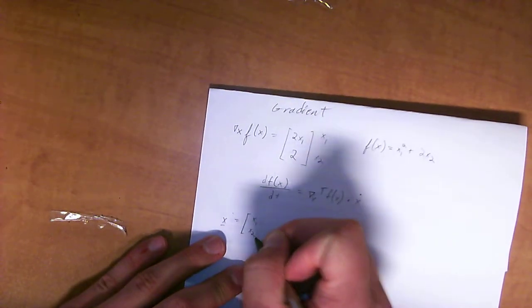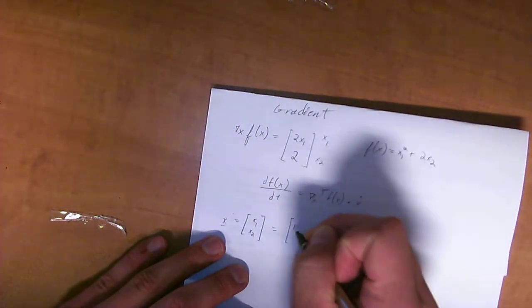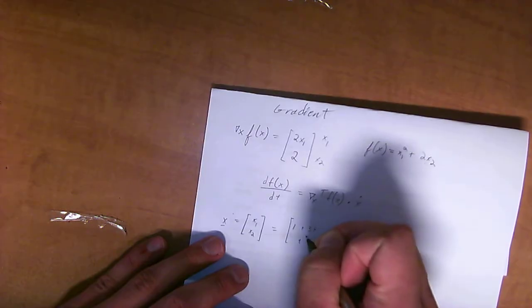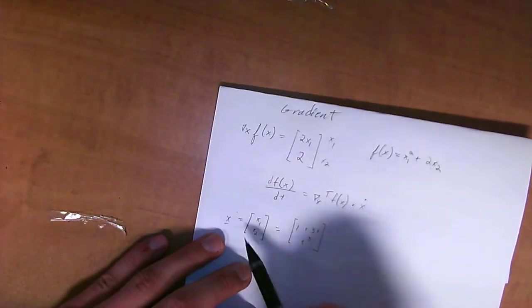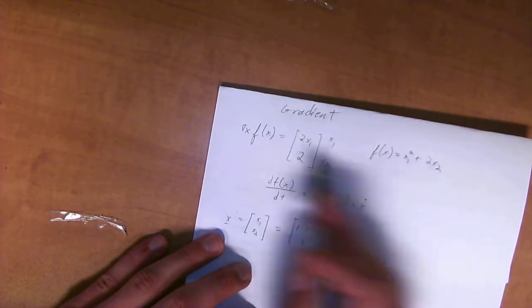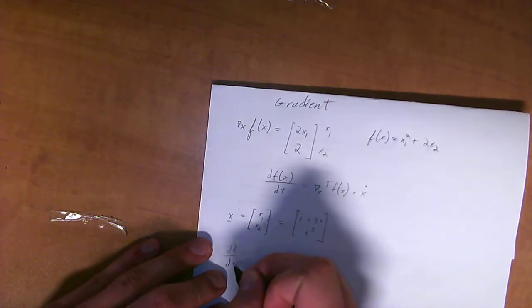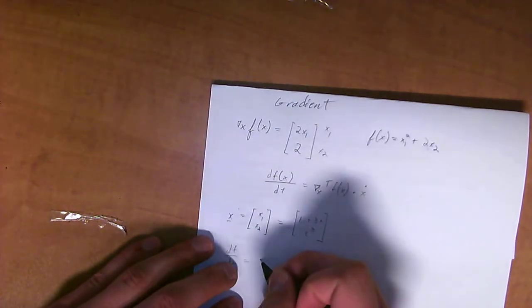If we want to find the derivative of this function with respect to t, then df/dt will equal the transpose of the column of the gradient. So, up here we found out that it was [2x₁, 2].